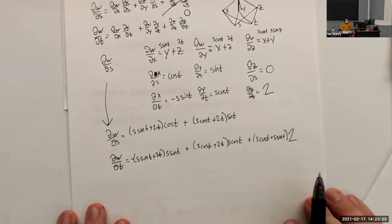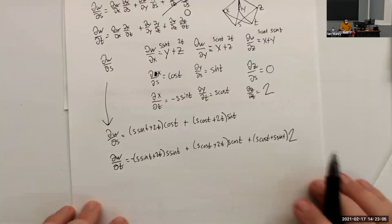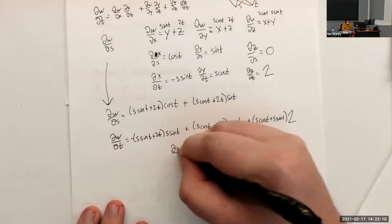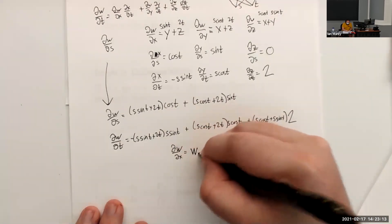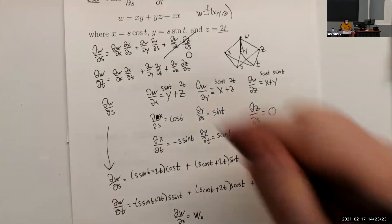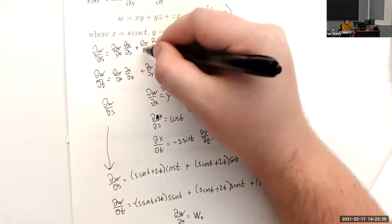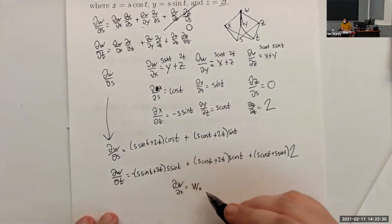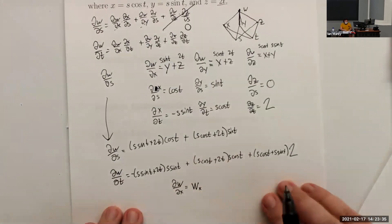A student asks about friendlier notation. You can write ∂w/∂x as w_x (subscript notation). The reason Leibniz notation has been used throughout is to illustrate how the chain rule works via canceling fractions, but subscript notation is perfectly acceptable.